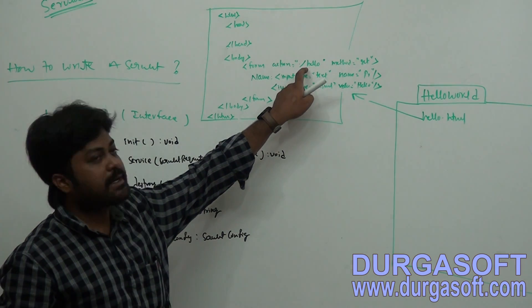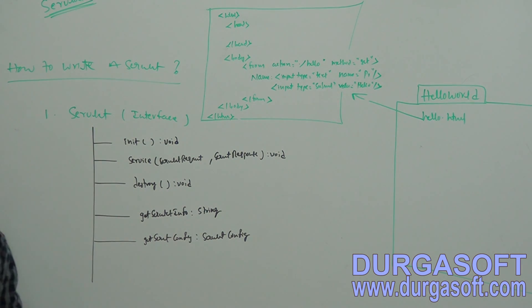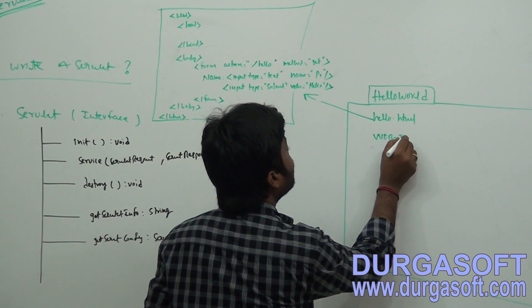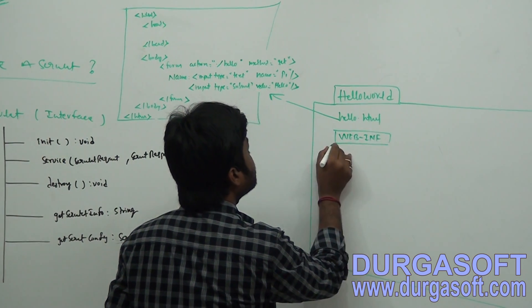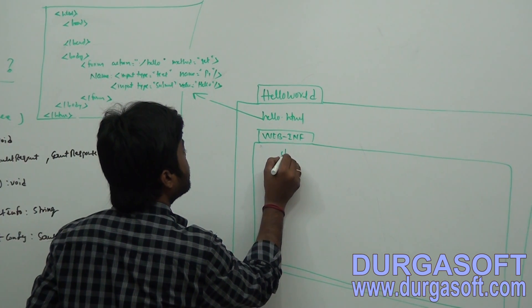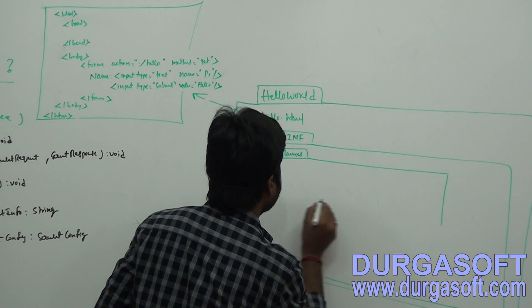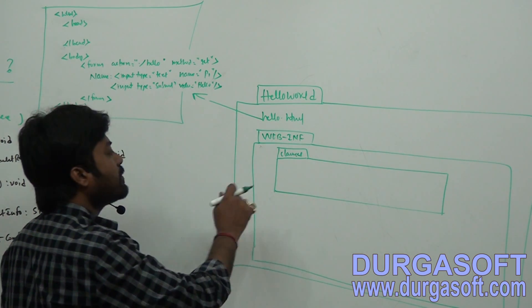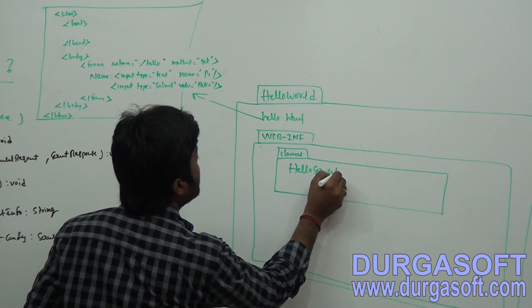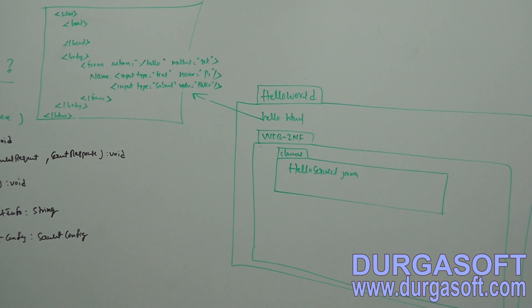When you submit this form, it will generate the '/hello' action. For that hello action, you need to write a servlet. Where do we write that servlet? Inside the WebInf folder, you need to create a classes folder. Inside the classes folder, you write your servlet — for example, HelloServlet.java. Once after writing your HelloServlet, you need to compile it.